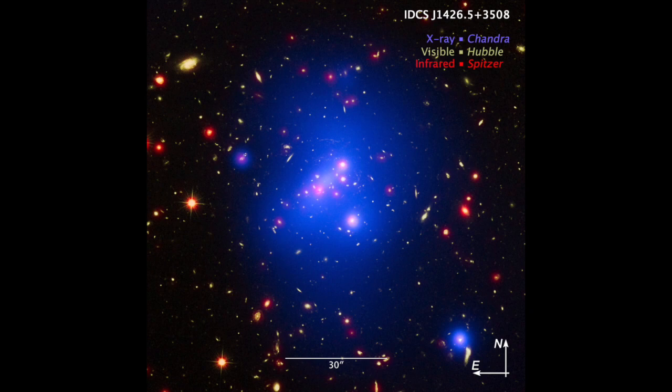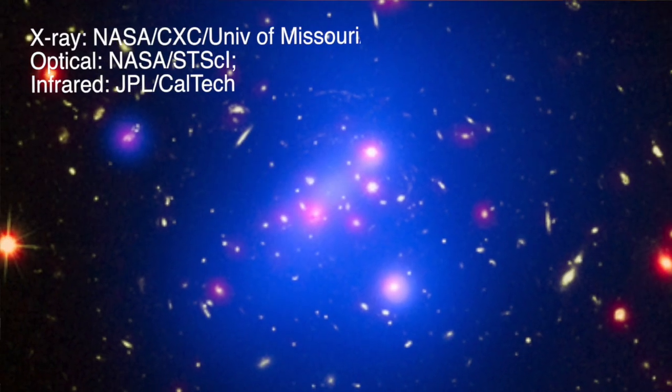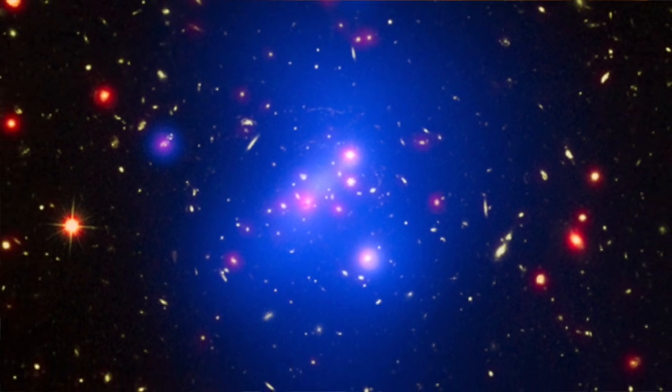The cluster, named IDCS J1426.5-3508 or, affectionately, just IDCS1426, is the most massive cluster of galaxies yet discovered in the first four billion years after the Big Bang. Because of their sheer size, scientists think it should take several billion years for them to form. The distance of IDCS1426 means astronomers are observing it when the universe was only 3.8 billion years old, implying that the cluster is seen at a very young age and that this may be one of the earliest clusters to form in the universe.